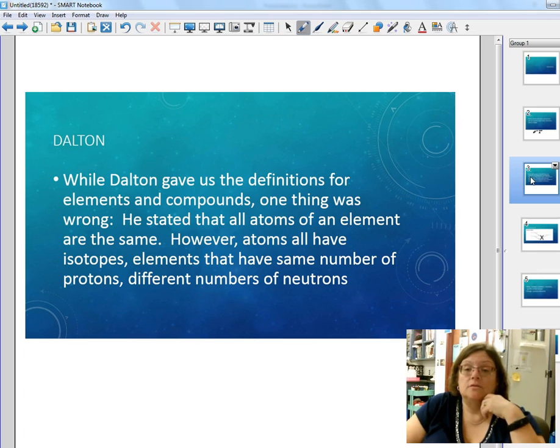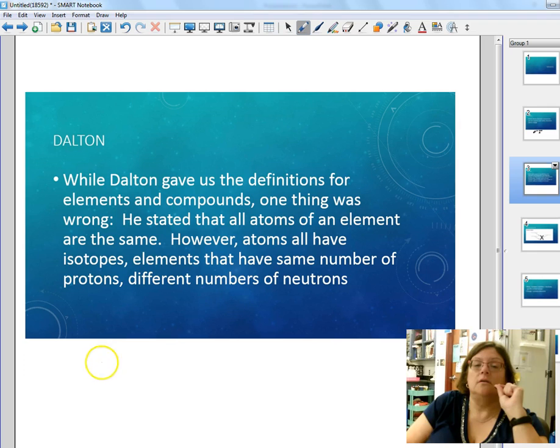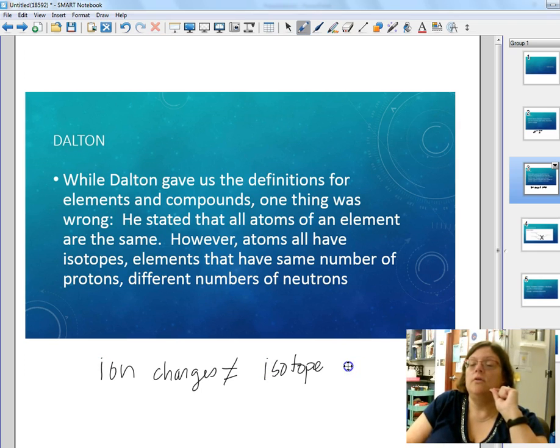Dalton gave us the definition of elements and compounds, but he said one thing that was wrong. He said that all atoms of every element are the same, and that's not true. We talked about isotopes. Isotopes are elements that have the same number of protons but different number of neutrons. So an ion, the charges are not equal. An isotope, the mass numbers are not equal.